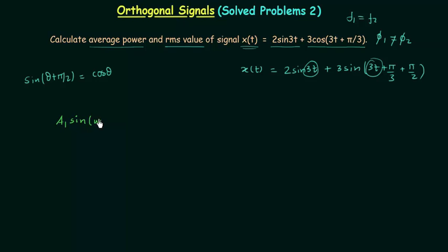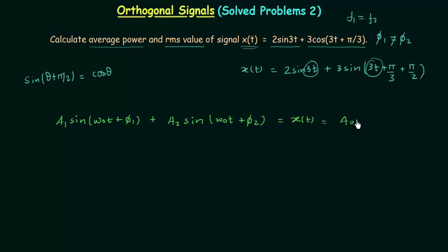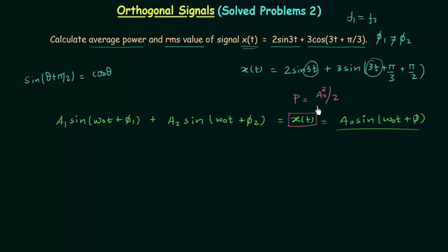The first signal is a1·sin(ω₀t + φ₁) and the second signal is a2·sin(ω₀t + φ₂). Their sum equals signal xt, which we can write as a0·sin(ω₀t + φ) — the resultant signal after adding these two sine functions. We already know that when signal xt equals a0·sin(ω₀t + φ), the average power P is equal to a0² divided by 2. So we only need to find a0 to calculate the average power.